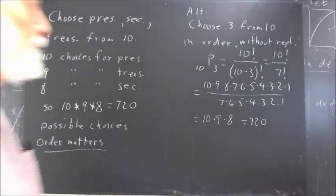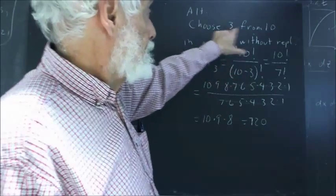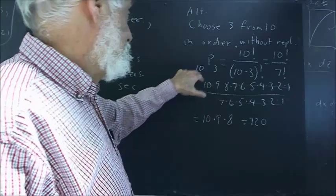So how many ways are there to do that? Well, this is a permutation. Order matters. We're choosing three from ten without replacement. Order matters. That's a permutation. So it's 10P3.